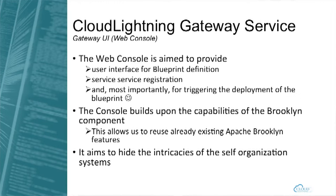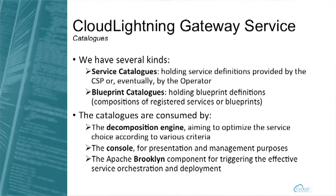We also try to hide the complexity behind the self-organizing system. Another core concept of the gateway service is the service catalogs. We have several types — service catalogs and blueprint catalogs — specialized for holding service definitions and group definitions. Besides offering a view to the operator regarding available services, these catalogs are used by the decomposition engine for triggering self-organization and finding resources in the self-organizing system. They are also used by the console for presenting to the user, and from the perspective of the gateway service, the main user is Apache Brooklyn, which triggers deployment and orchestration of services based on these catalogs.